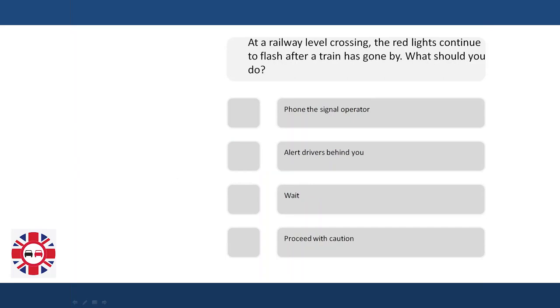At a railway level crossing, the red lights continue to flash after a train has gone by. What should you do? Phone the signal operator? Alert drivers behind you? Wait? Proceed with caution?